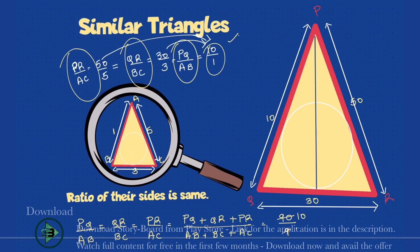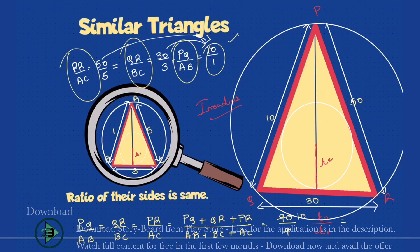Now let's draw an incircle inside a triangle. If two triangles are similar and I draw an incircle — a circle drawn inside the triangle touching all three sides — it will have a radius called the inradius. Let R1 be the inradius of the smaller triangle and R2 be the inradius of the larger triangle PQR. Then R2 upon R1 will also be equal to the ratio of their corresponding sides. So remember: the inradius ratio also follows the same ratio.